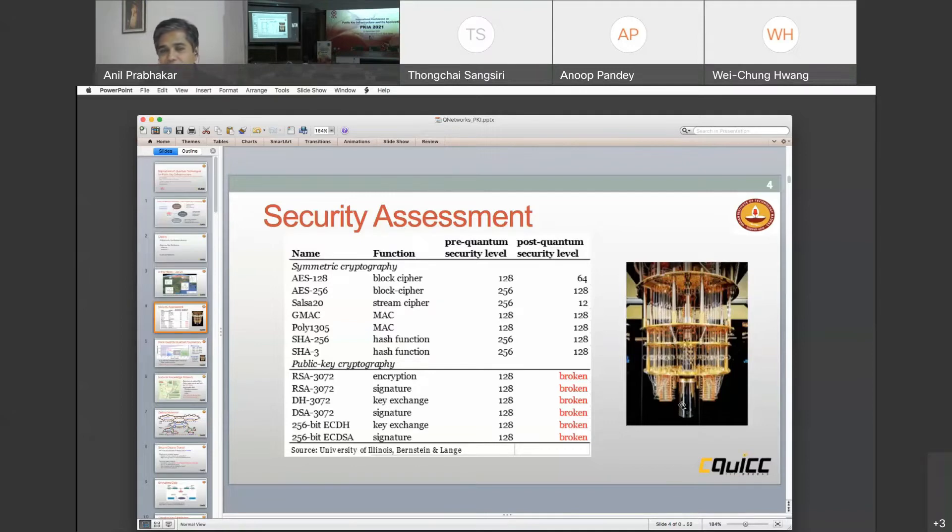But that is not what interests us. What interests us is that if there is a quantum computer, then we believe that all these public key cryptographies are broken. If you look at RSA 3072 or DH 3072, they are all compromised. Symmetric cryptography that uses AES-128 or AES-256 becomes weaker. AES-256 becomes only AES-128 and likewise.